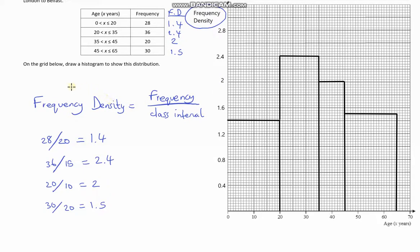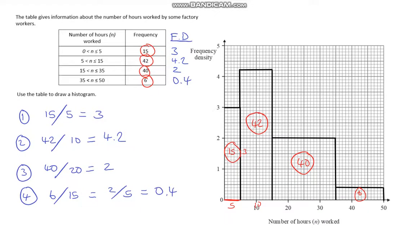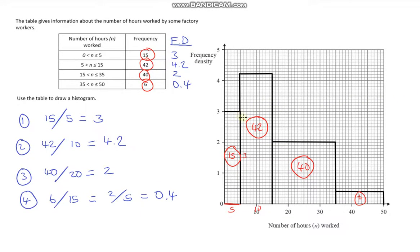So whenever we've got a histogram, the area of each of the bars is simply the frequency. In the next video, we're going to be looking at interpreting histograms, so that's where this is going to come in useful. I hope you enjoyed that video, and thank you for watching.